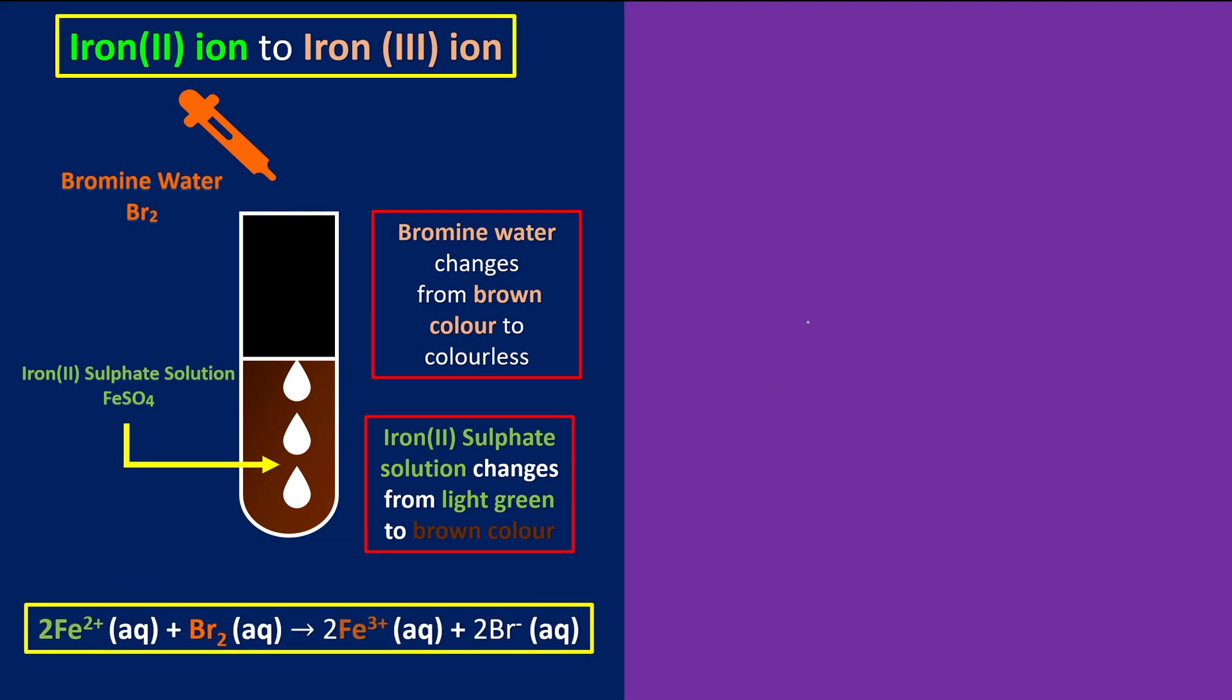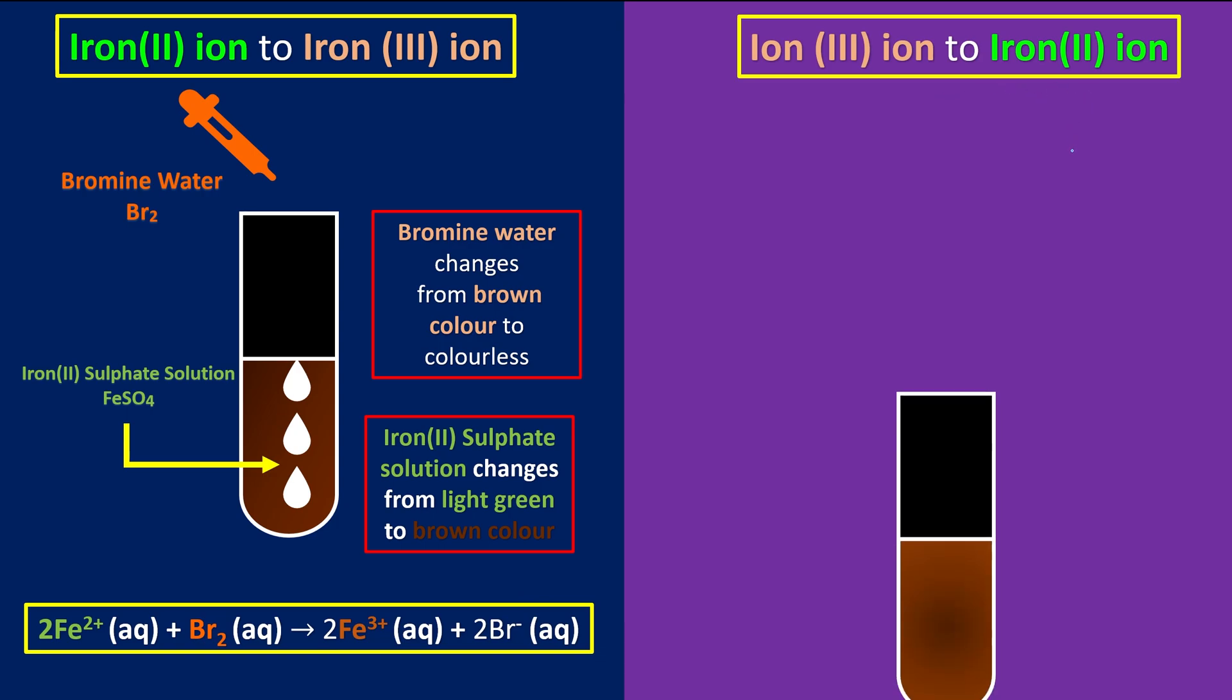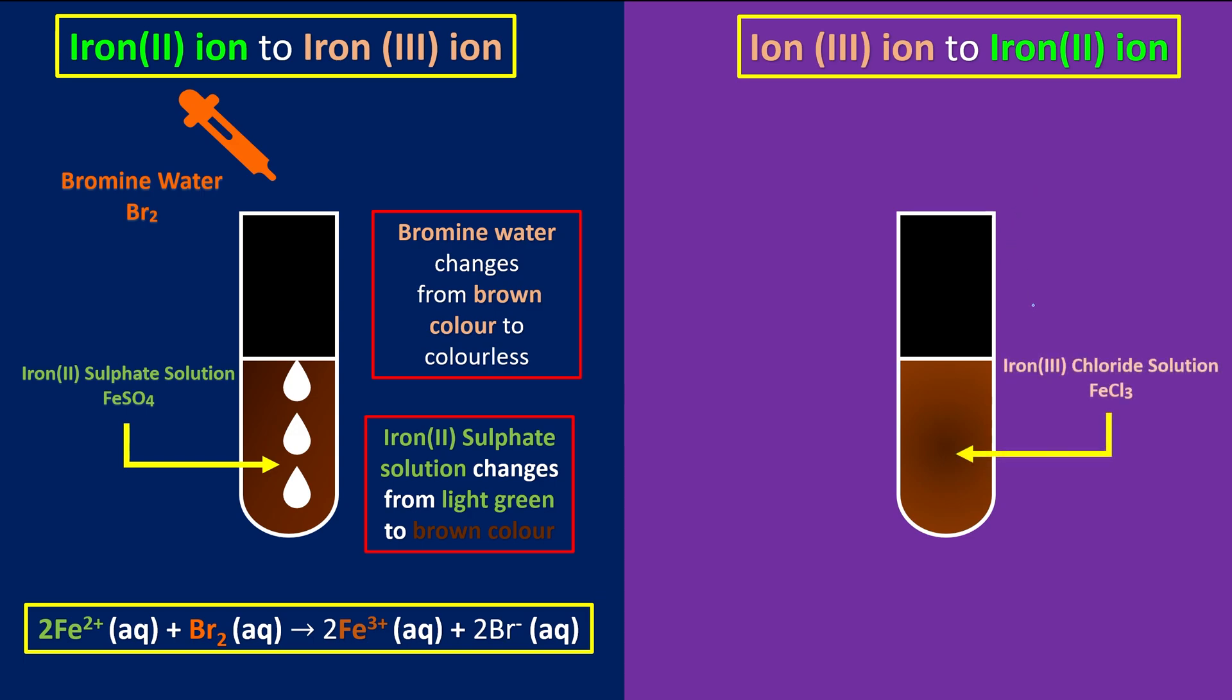Now we're going to look at how we're going to convert iron(III) ions to become iron(II) ions. First, we prepare a test tube that's filled with iron(III) chloride solution. As we can see here, now we have iron(III) ions. As we mentioned before, you need to receive the electrons so that it goes back to iron(II) ions.